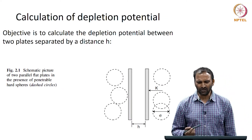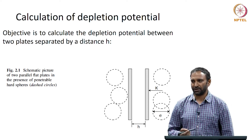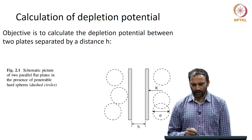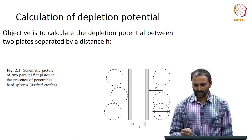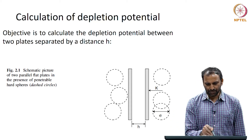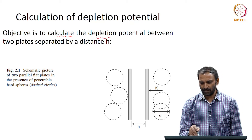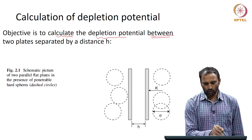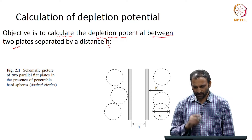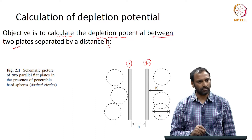We can think about a simple way of deriving an expression for depletion potential. We will take a very simple case — this particular geometry is chosen because it is easy to calculate. The objective is to calculate the depletion potential between 2 plates which are separated by distance h.